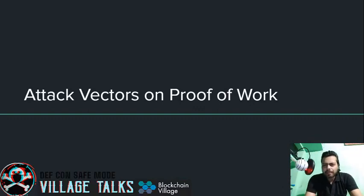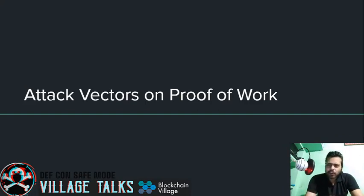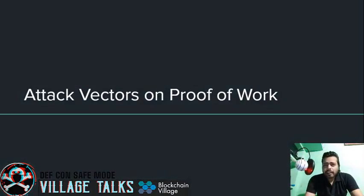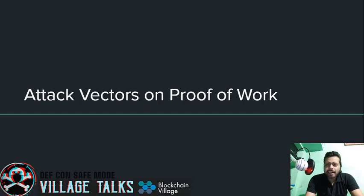In proof-of-work, miners compete with each other for valid block creation. The block header must be less than a set threshold. Mining difficulty defines the current computational power of the blockchain network and can be updated at regular intervals to match the current computational power, ensuring block creation happens at a certain frequency.